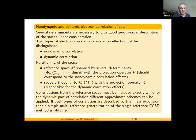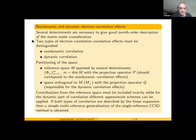Let me start with a description of non-dynamic and dynamic correlation. If we have several determinants that are important in our wave function — necessary to give a good zero-order description of the states under consideration — we have to distinguish two types of electron correlation: non-dynamic correlation and dynamic correlation. With this we can associate a partitioning of configuration space into two subspaces.